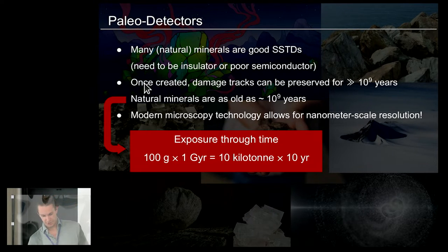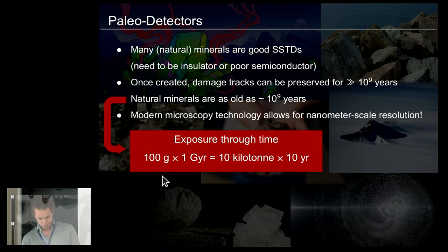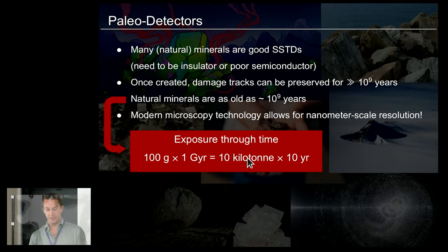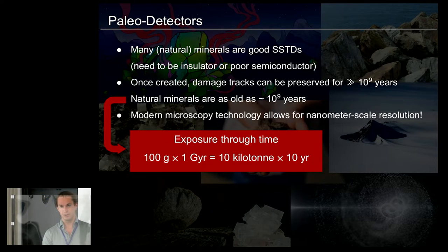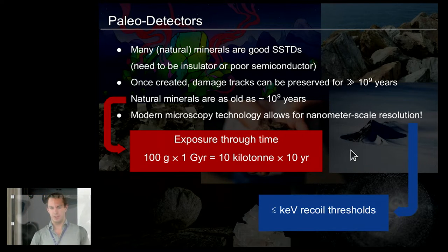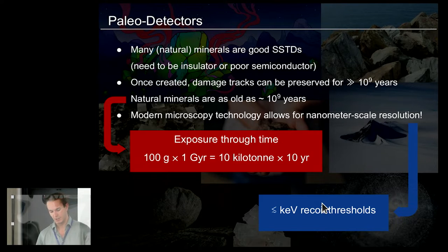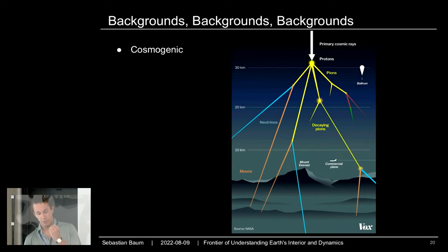What do you get from this? The age of these minerals and the fact that tracks survive for extremely long times gives you an enormous exposure. If you image 100 grams of material that has been recording tracks for one giga year, you would have an exposure equivalent to a conventional detector of 10 kilotons operated for 10 years — three orders of magnitude larger than any detector ever built for dark matter. And modern microscopy achieving nanometer-scale resolution could be sensitive to nuclear recoils with energies as low as a keV.